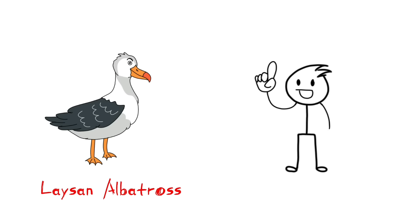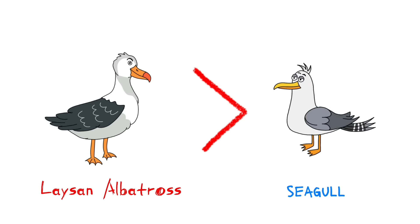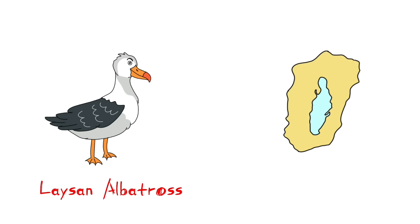This is a Laysan albatross. It kind of looks like a seagull, but it's slightly bigger. They are found primarily in Laysan Island, hence the name Laysan albatross.